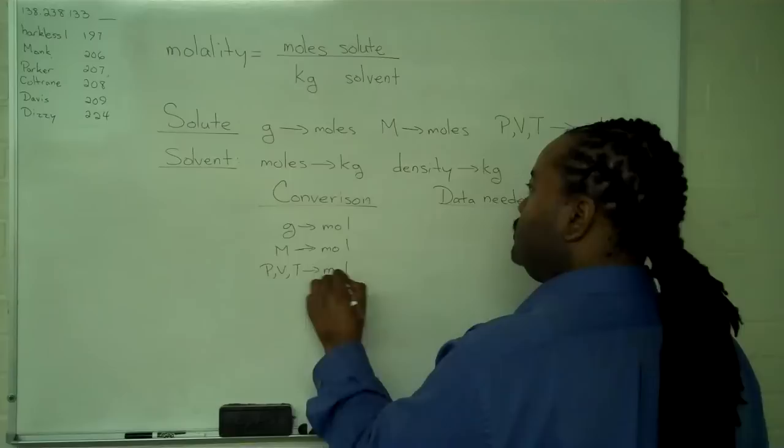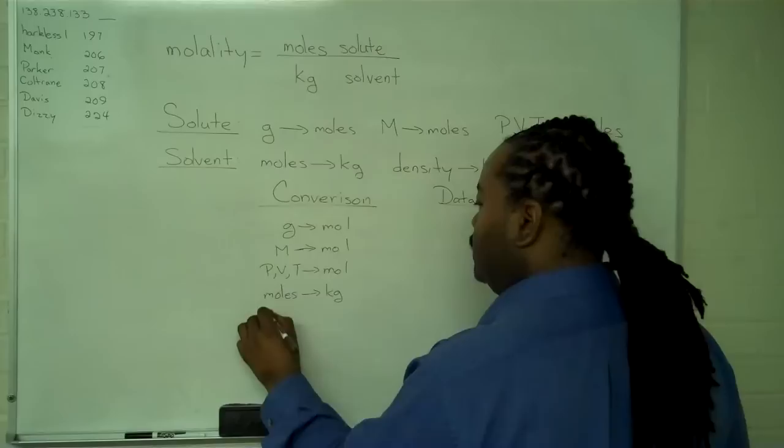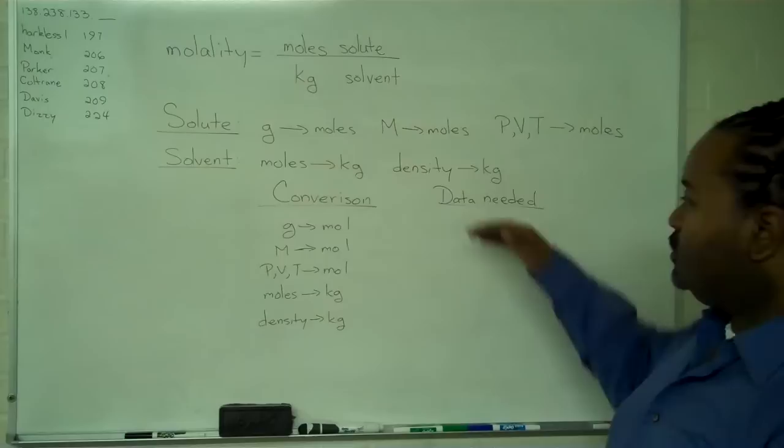and then your solvent conversions: moles to masses, or density to masses, then there are things that you're going to need. So, from grams to moles, you'll need the chemical formula.